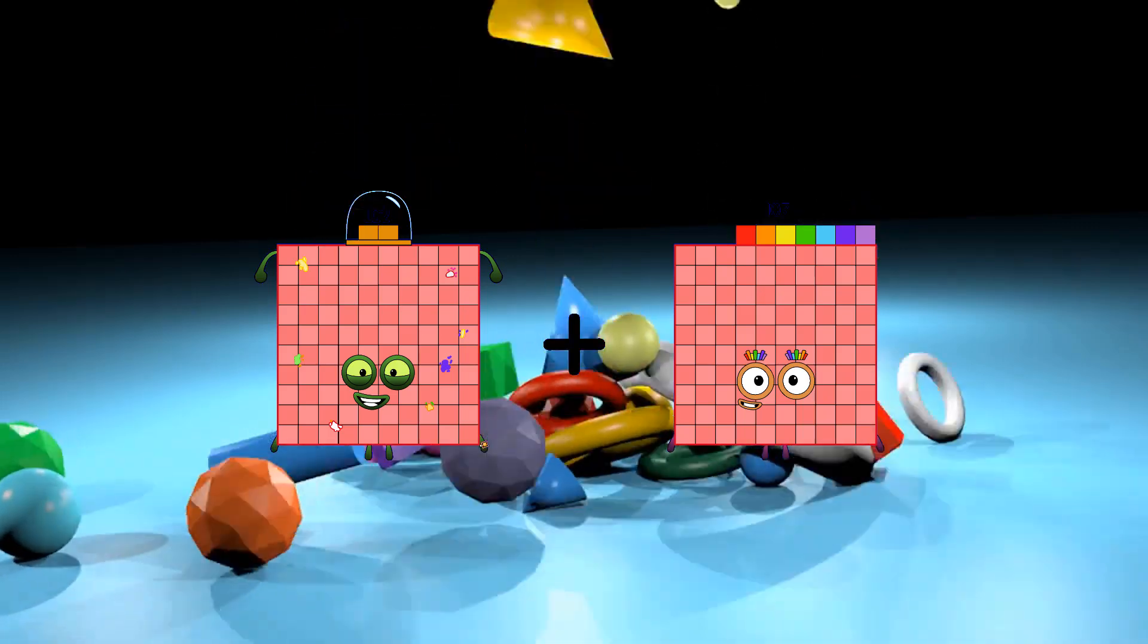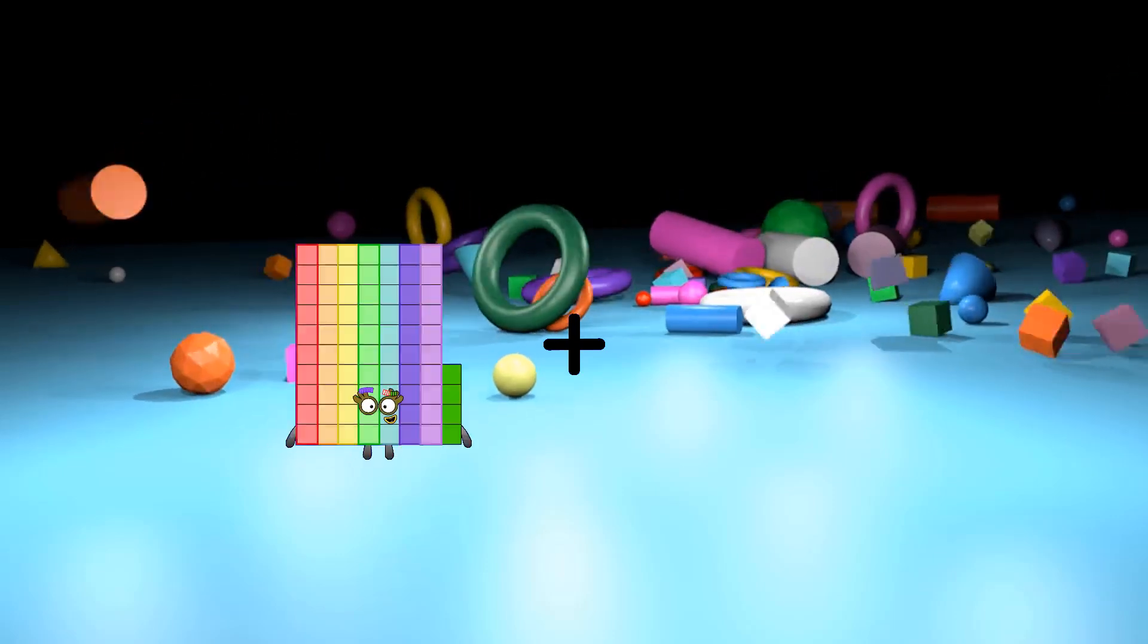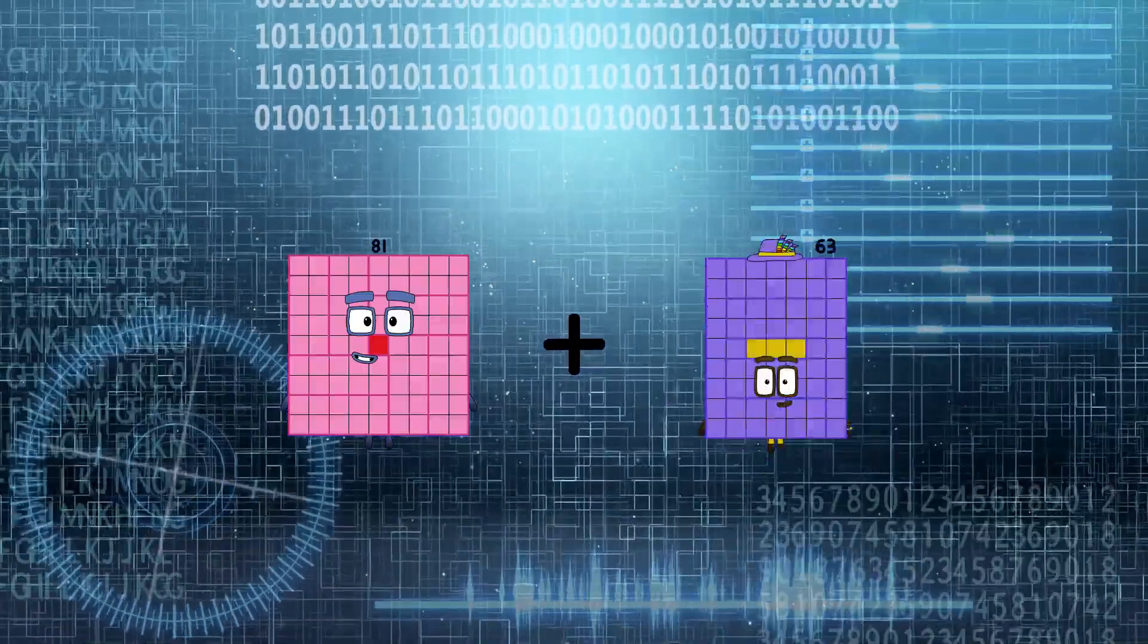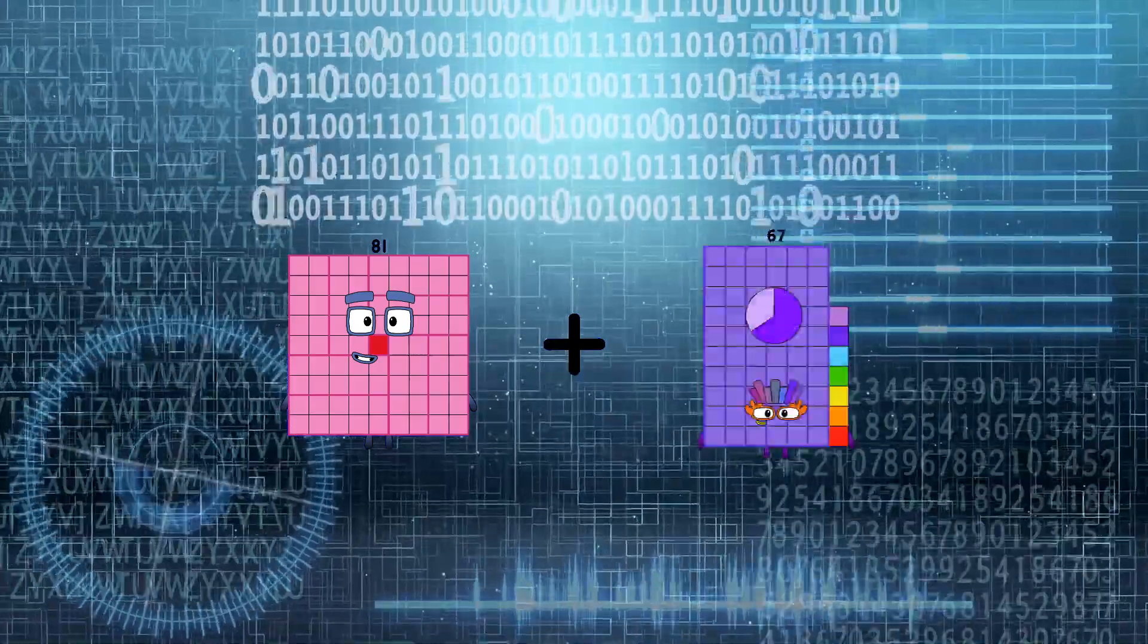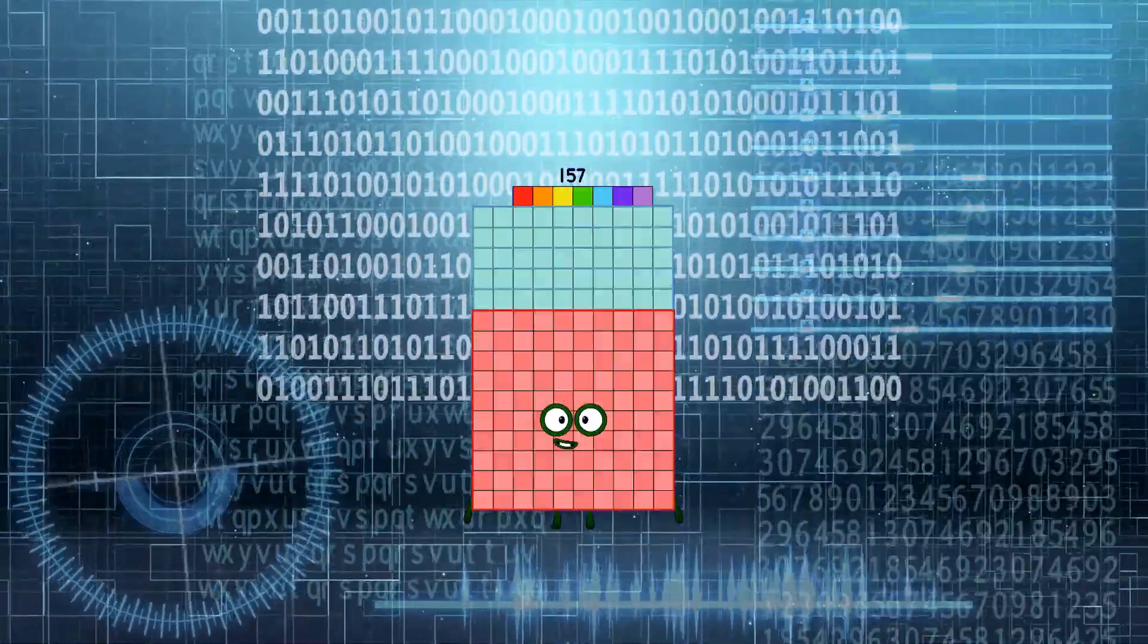102 plus 107 equals 209. 81 plus 76 equals 157.